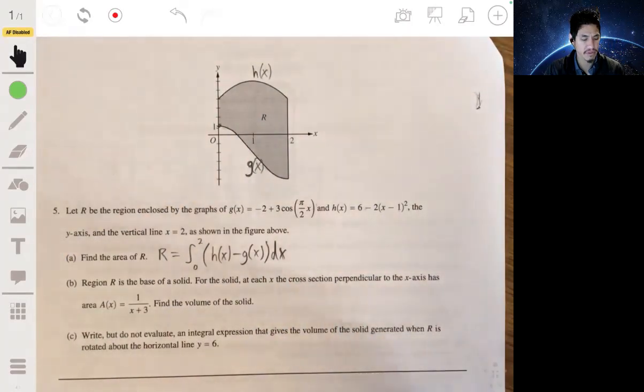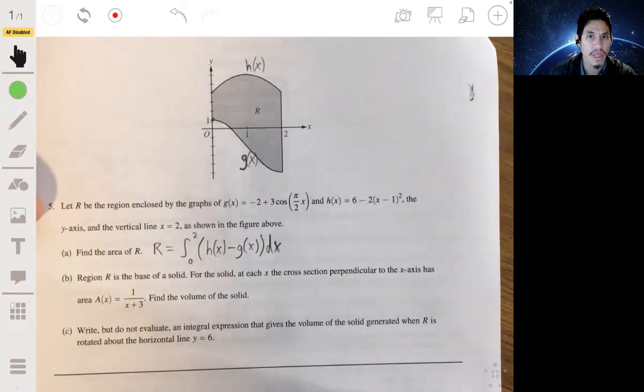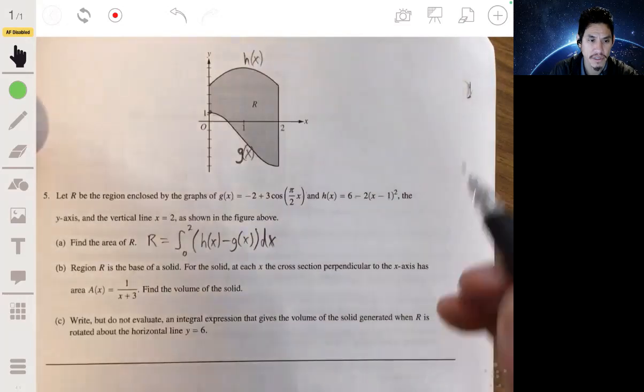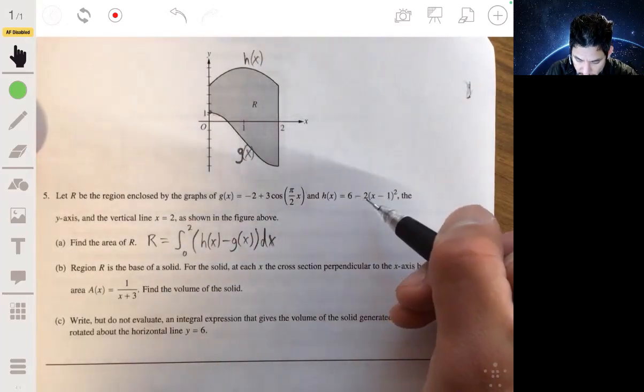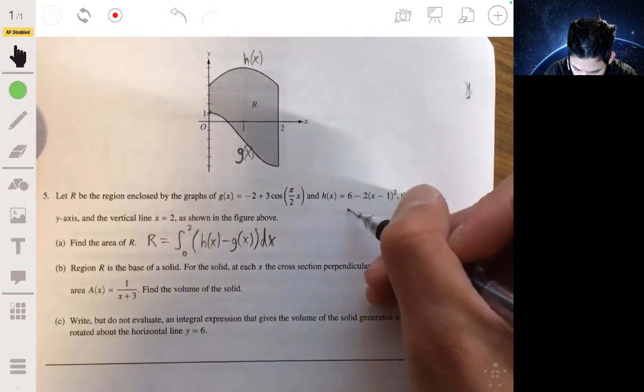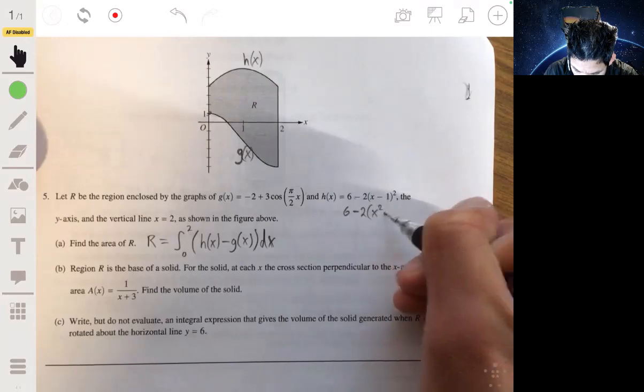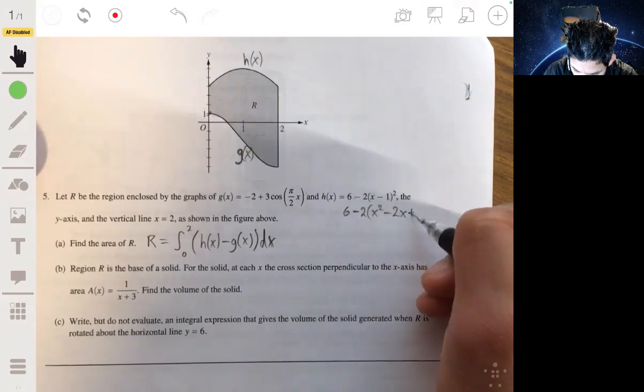And then you just have to, it's really going to come down to doing the correct algebra and integration calculation. So what I like to do here is for h(x), I like to expand this first so I don't make a mistake. So this will be 6 minus 2 times (x² - 2x + 1).